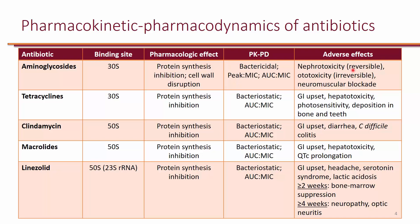Aminoglycosides can also cause ototoxicity, which is usually irreversible, and they can rarely cause neuromuscular blockade. Keep in mind that aminoglycosides are not orally available, whereas the rest of the antibiotics listed in this table are orally available. These oral agents can cause gastrointestinal upset and are also available as IV formulations.